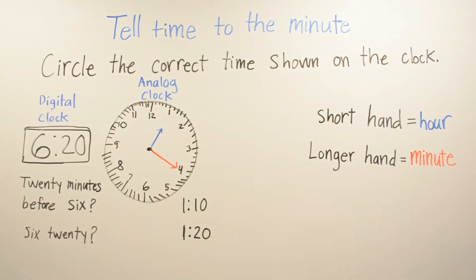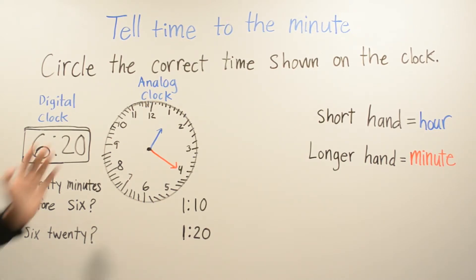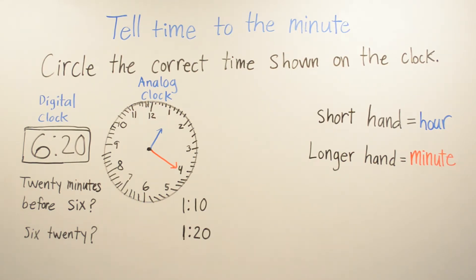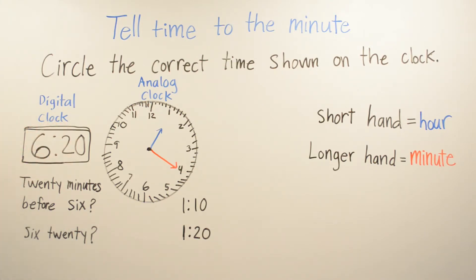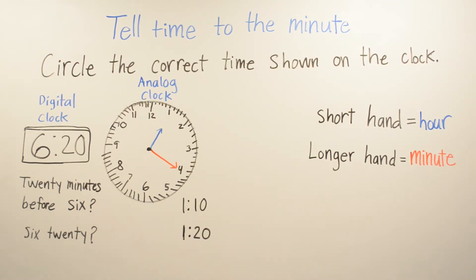For this problem, we have two different clocks — a digital clock and an analog. Let's start off with the digital clock. The digital clock shows the time in numbers, so right here it is 6:20. Is it 20 minutes before 6 or is it 6:20? The time is 6:20, so your answer will be 6:20.